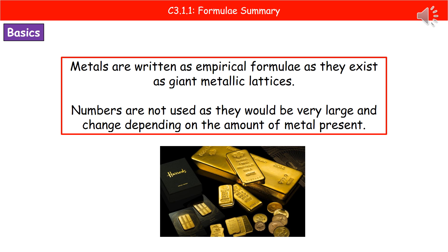The reason we don't use numbers is that they would be very large and would also change depending on how much metal was present, since the number refers to the number of atoms. For example, a gold bar of different sizes each has a different number of atoms, yet it's all still made of gold — so we simply write it as Au, the empirical formula.